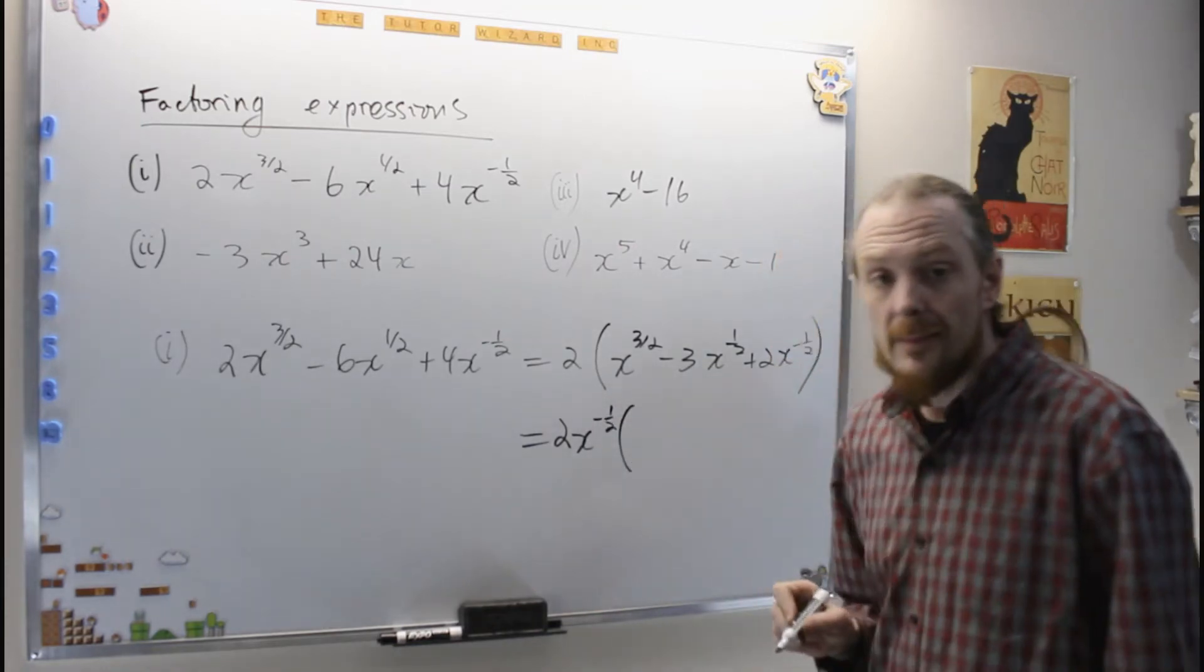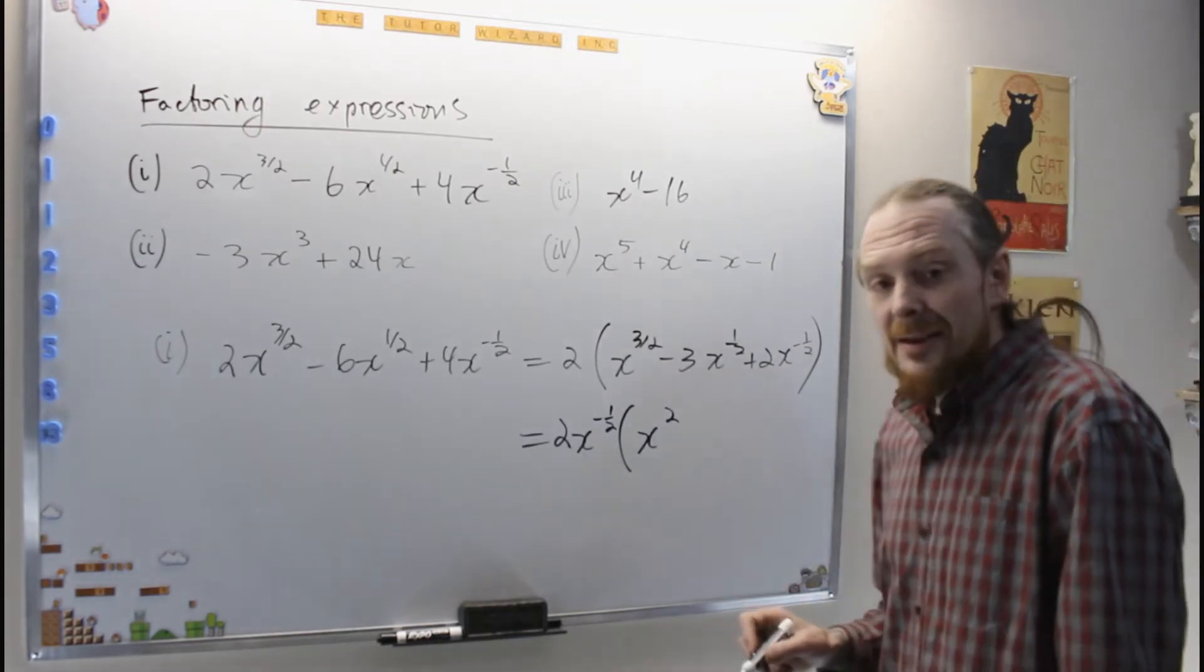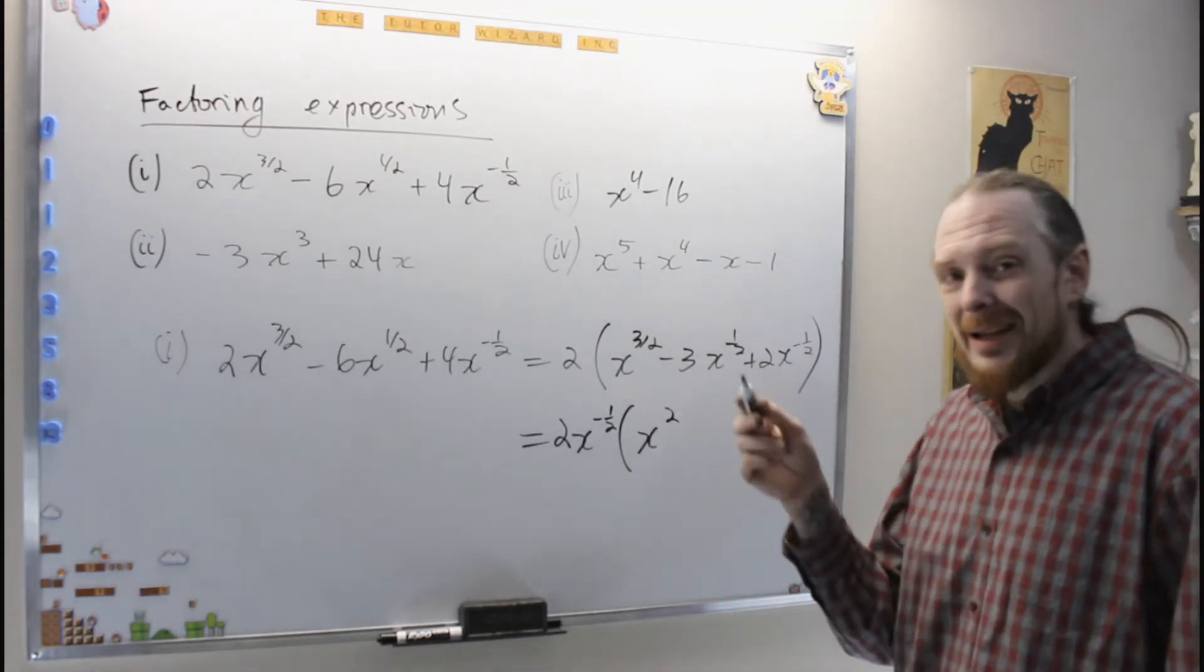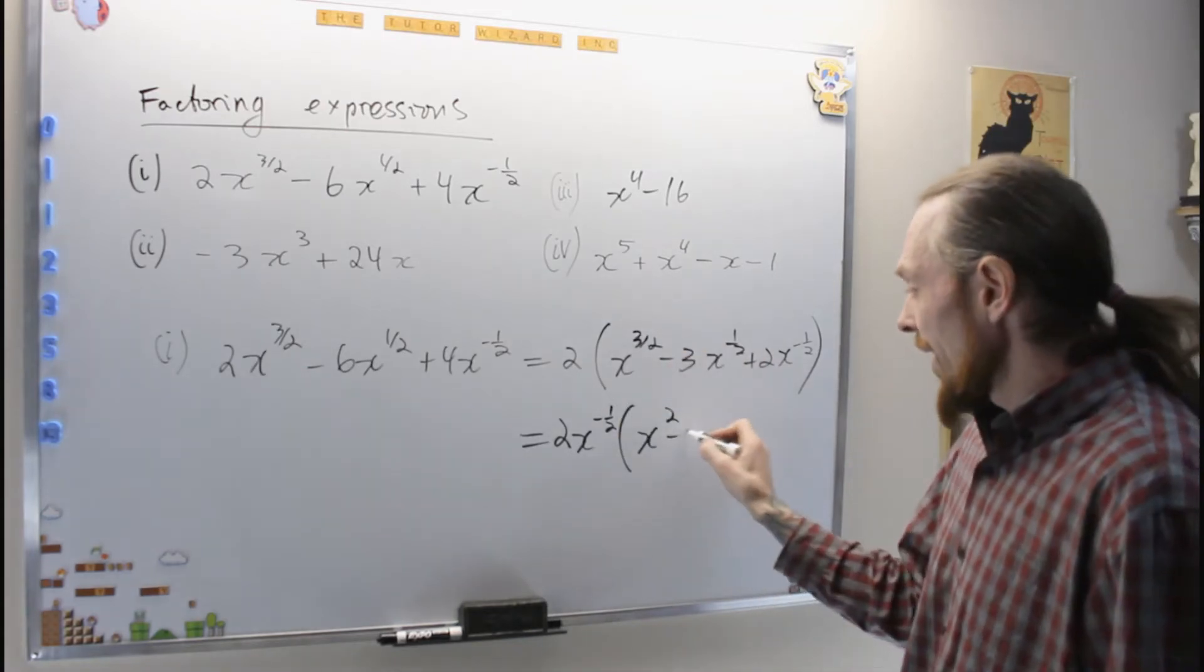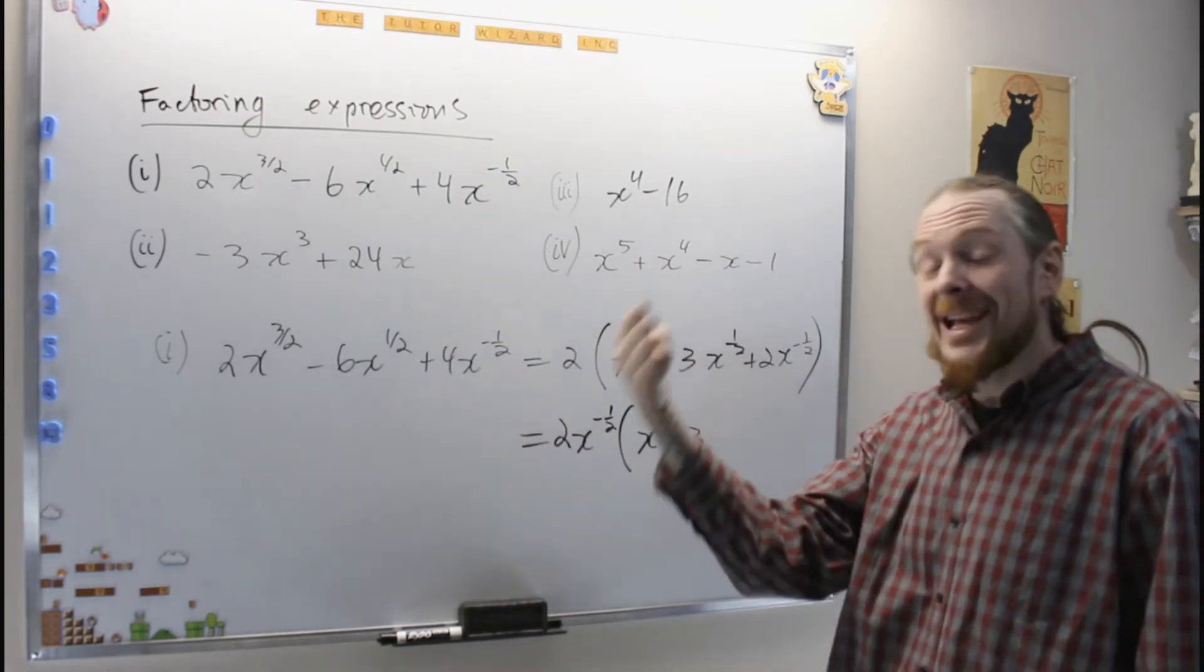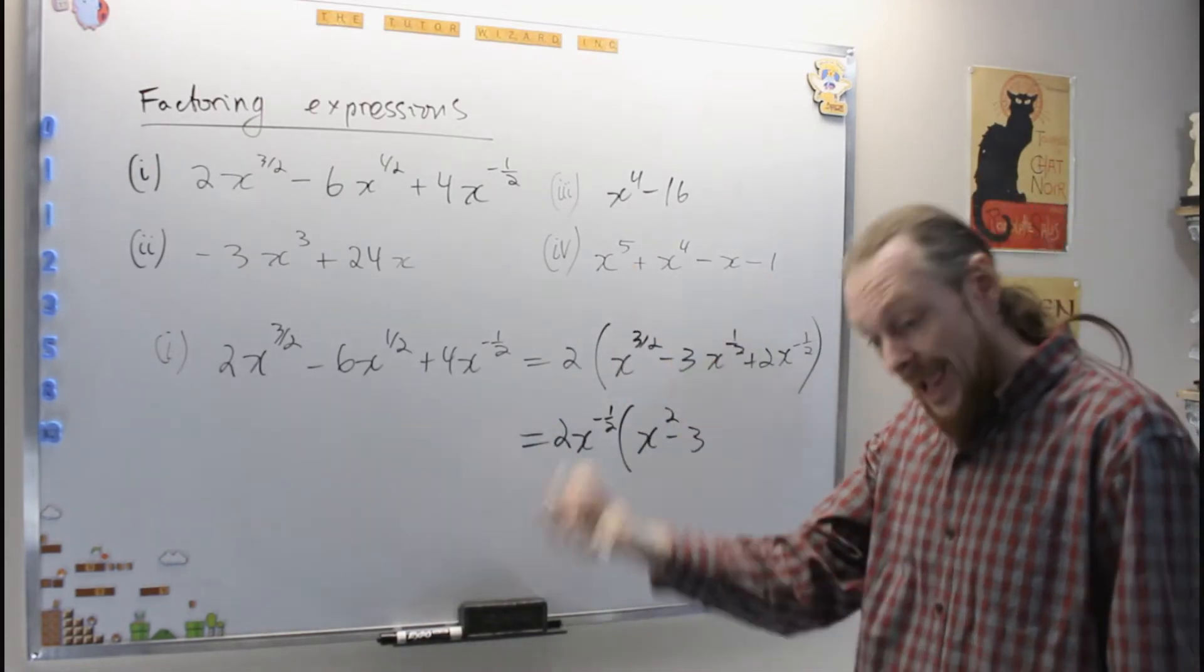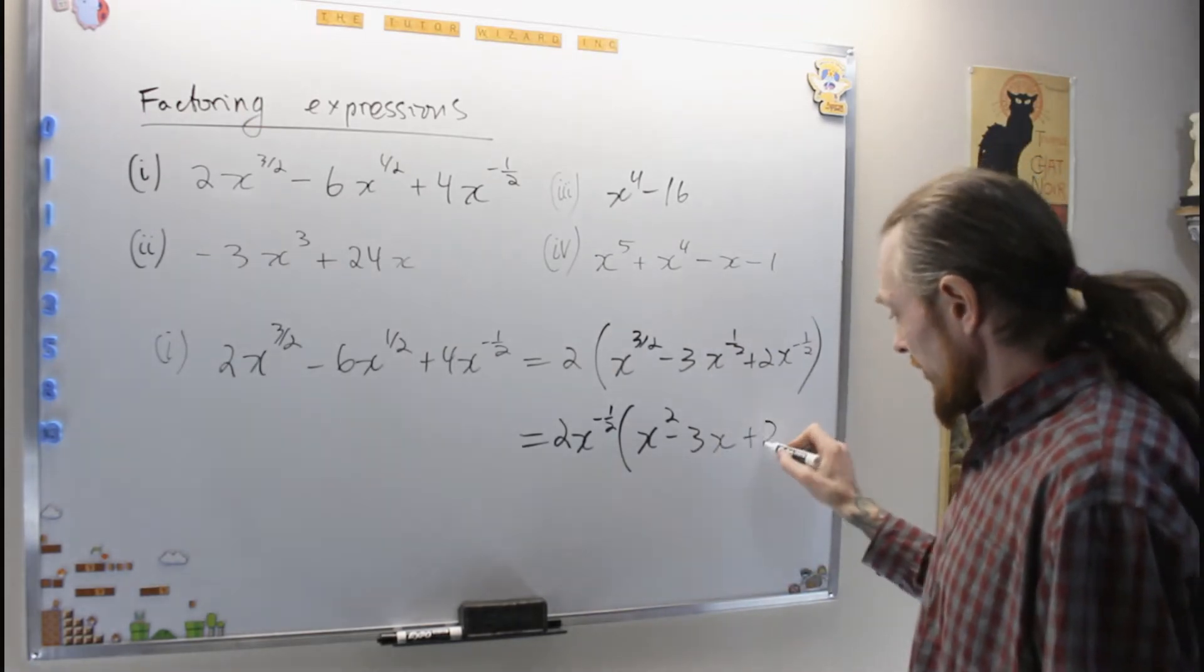Which is now x squared, x to the 3 halves minus minus 1 half is x to the 4 over 2, which is x squared, minus 3 times x to the 1 half minus minus 1 half, plus 1 half is x to the 1 half plus 1 half, which is x to the 1 plus 2.